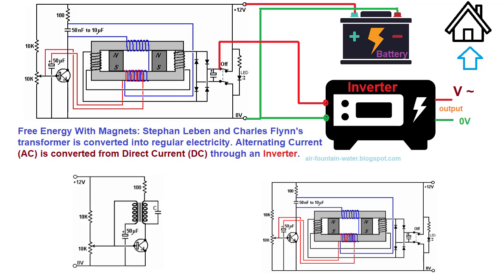Stefan Levin's journey into free energy begins with the exploration of Alexander Meissner's 1913 Circuit, a concept that exploits back EMF to generate electrical oscillation resonance. A crucial element of this circuit is the C-terminal of the transistor, where the main coil of the transformer is connected. This establishes the foundation for the subsequent innovations brought forth by Levin and Flynn.